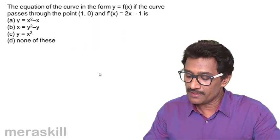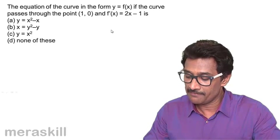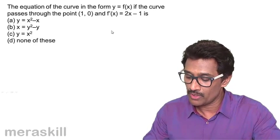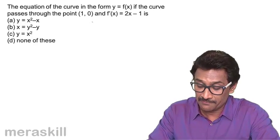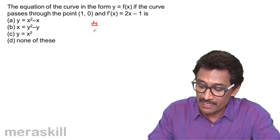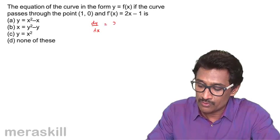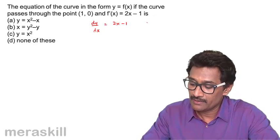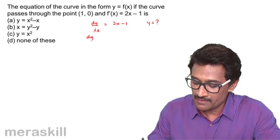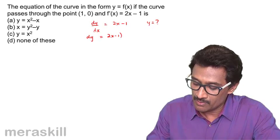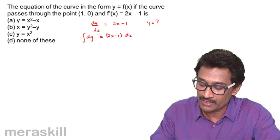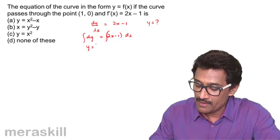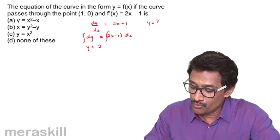We have the equation of the curve in the form y = f(x). The curve passes through the point (1, 0) and f'(x) = 2x minus 1. So if dy/dx is equal to 2x minus 1, then dy is equal to (2x minus 1)dx. To find y, we need to integrate both sides. So we get y is equal to 2x squared by 2 minus x.